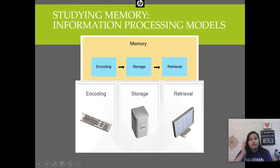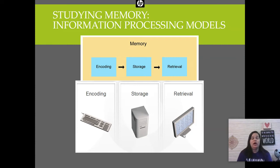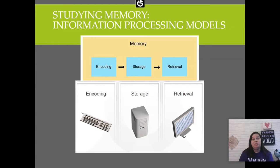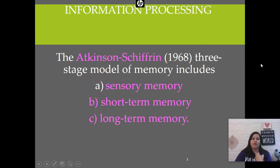There are three levels of memory in the information processing models. The first is encoding — our focus in this section — all about how we get information into our brain. Then how we store that information, including long-term and short-term memory. And then what may be the hardest part of memory: retrieval. It is a sequential process. The Atkinson-Schiffrin model specifically identifies these three stages: sensory memory, short-term memory, and long-term memory.